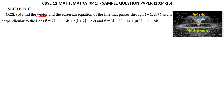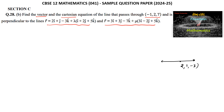We need to find the vector and Cartesian equation of the line that passes through (-1, 2, 7) and is perpendicular to both the lines given. Here are two lines. The first line passes through the point (2, 1, -3) and has the direction ratios 1, 2, 4.